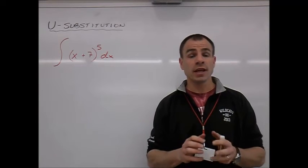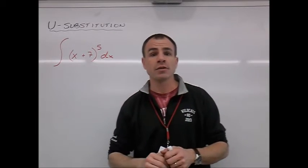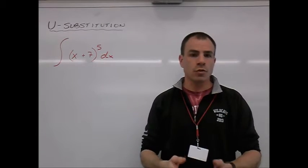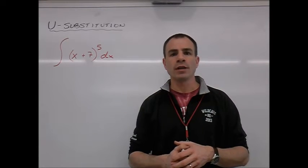Now if this was just the antiderivative of x plus 7, if that 5 was not there, it's a nice easy antiderivative for us to get. We would get x squared over 2 plus 7x plus c, and boom, we would be on our way to the next problem.